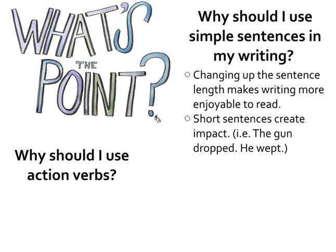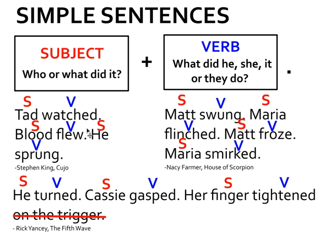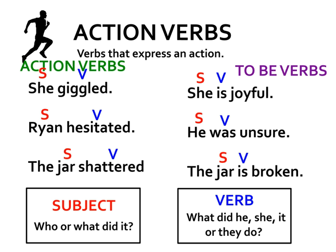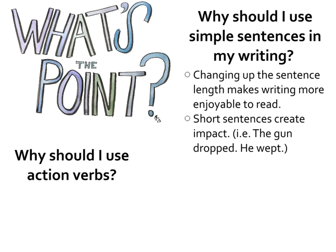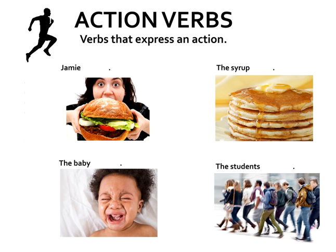Let's look at these verbs: watched, flew, sprung, swung, flinched, froze, smirked, turned, gasped, tightened. We said that these were all action verbs — they really paint a picture for the reader. Let's look at a few of these action verbs and then we'll come back and ask why. Why do we use action verbs?